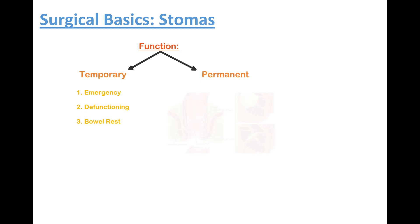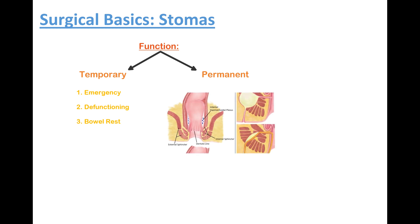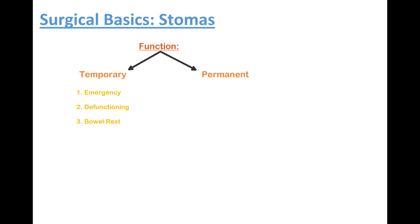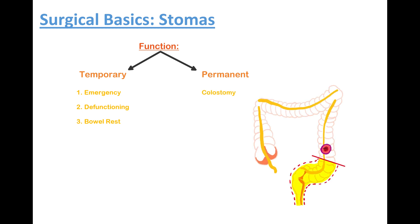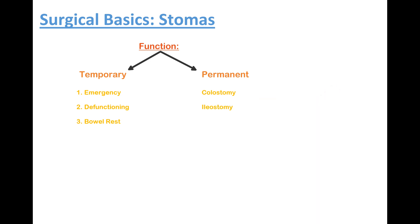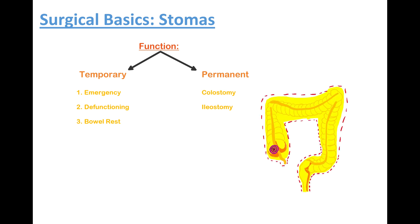This might be used in a complex anorectal fistula and major surgical perineal wounds. As we said before, permanent stomas are usually end stomas and are necessary when no distal bowel segment remains after a resection. For example, a colostomy is required after an abdominoperineal excision of a low-lying rectal or anal cancer. An ileostomy is also used after the excision of the whole colon and rectum, which is known as a panproctocolectomy.